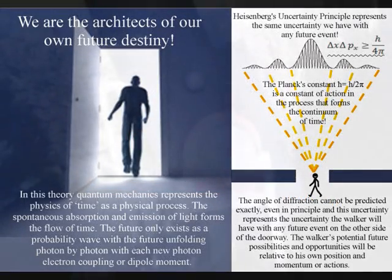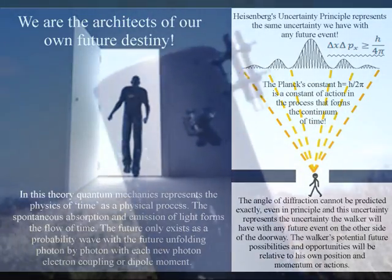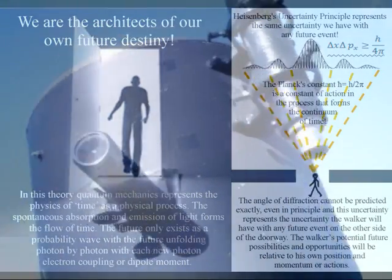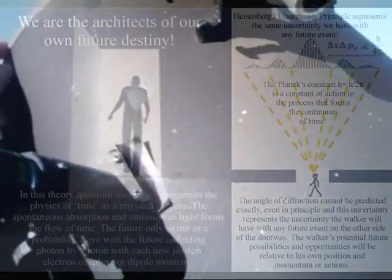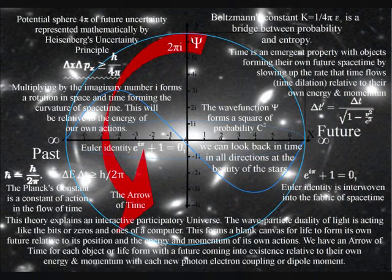Therefore, an observer can look back in time at the beauty of the stars in all directions from the center of their own reference frame. This is because they are forming their own spacetime by collapsing the waves of light into new photon oscillations, forming their own future potential.